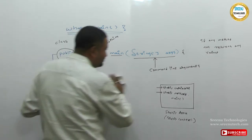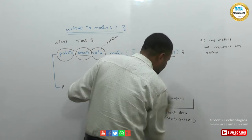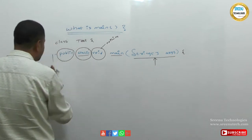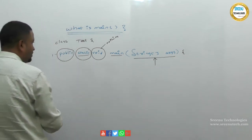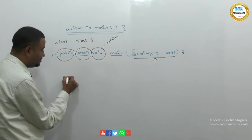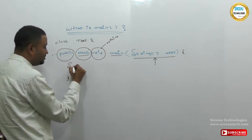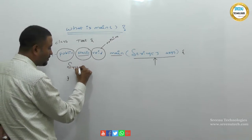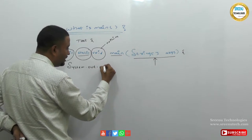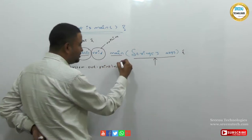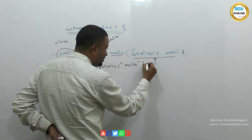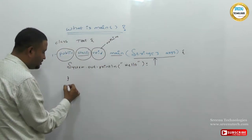Let's see one simple program. I have one main method, and in this main method I am printing one message: System.out.println. I am printing the message 'Hello'.